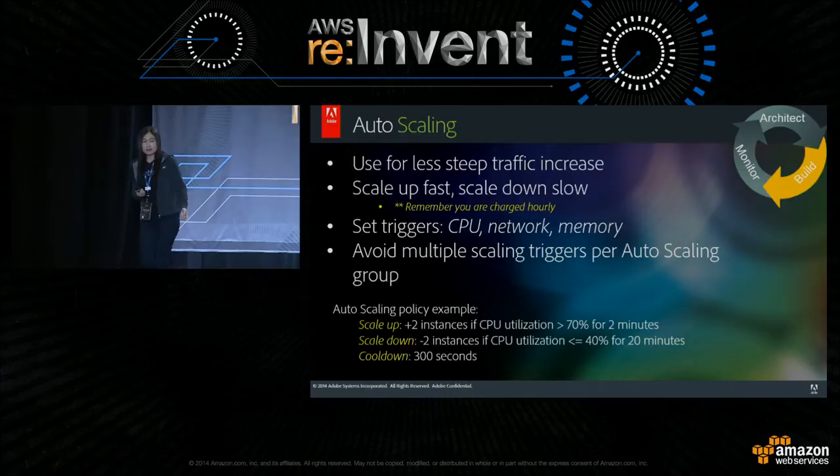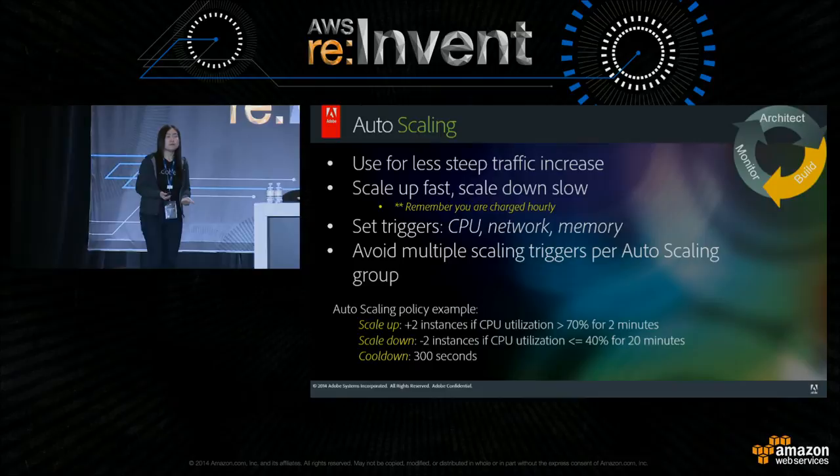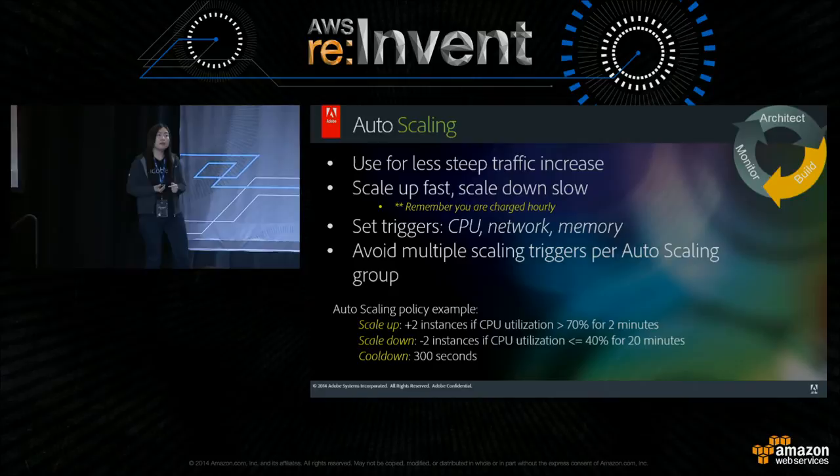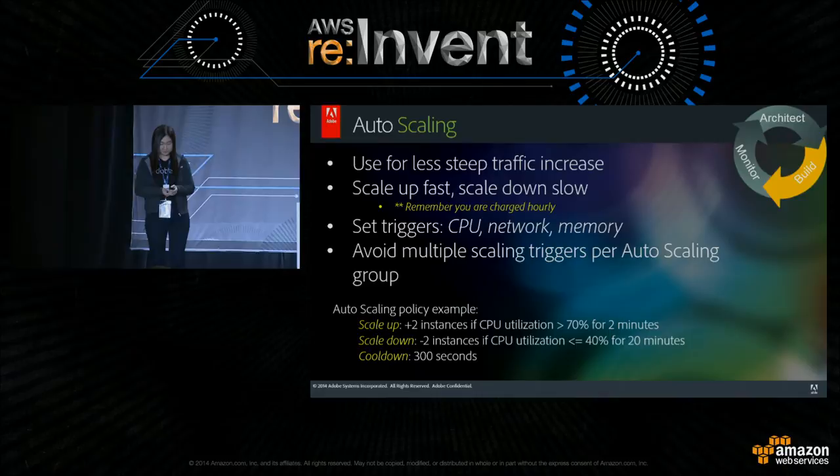Here's an example of our auto-scaling policy: we scale up two instances when CPU goes above 70% for two minutes, and scale down when CPU goes below 40% for 20 minutes — notice the difference in timing. We also have a cool-down of 300 seconds. We scale up and down two instances at a time because we run in two availability zones, so we always want to make sure the AZs are balanced.